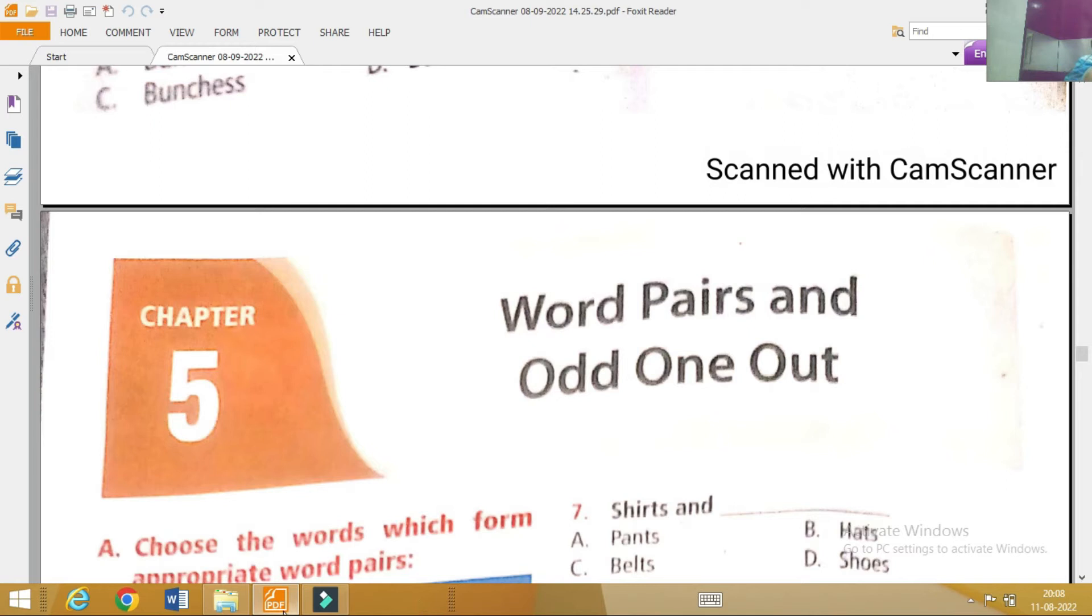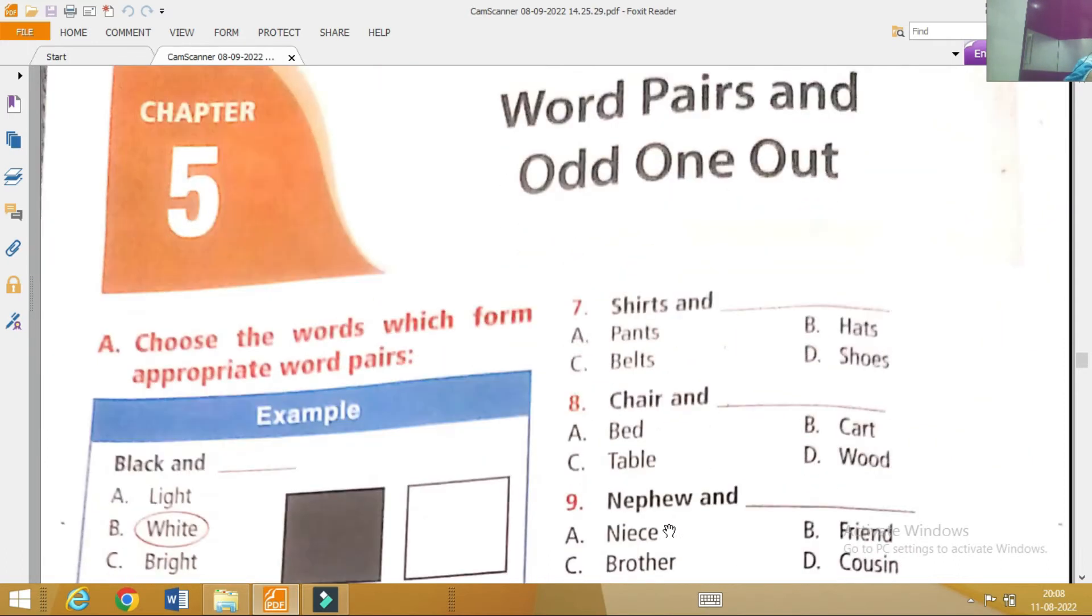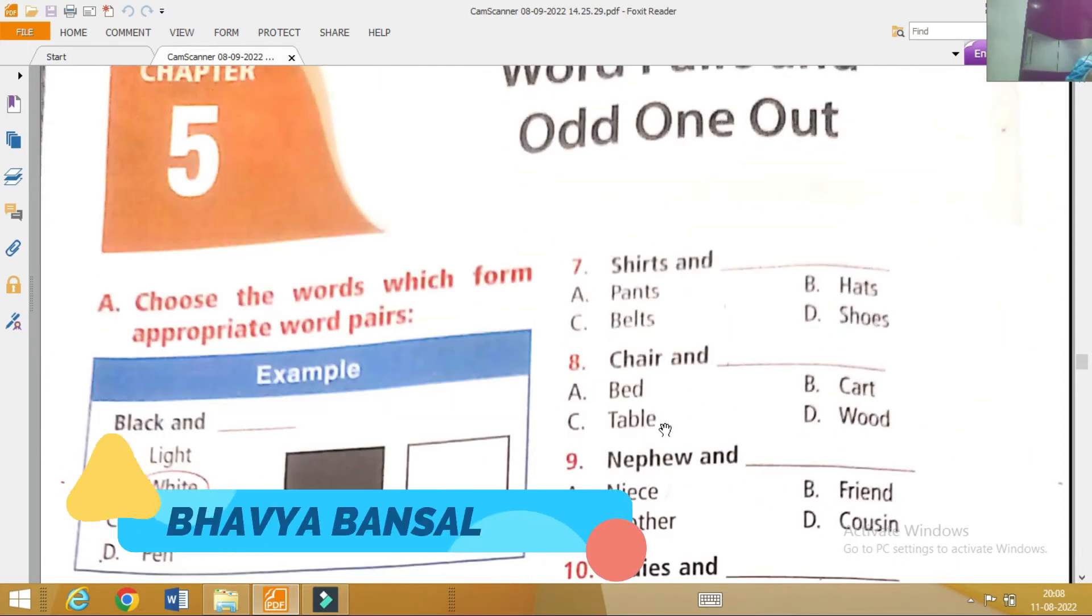Shirt and? Shirt and. A will be right option, pant. T and T. C will be right option.